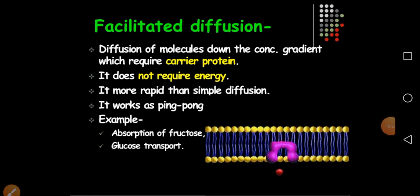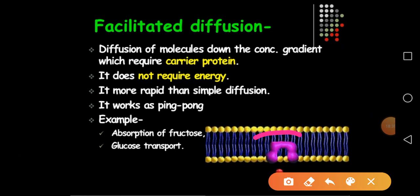The second type of passive transport is facilitated diffusion. Here a carrier is required for transport purposes. Transport still takes place from higher concentration to lower concentration — down the concentration gradient — but the difference is that a carrier is required. However, there is still no requirement for energy. Examples include absorption of fructose and glucose transport across the plasma membrane.